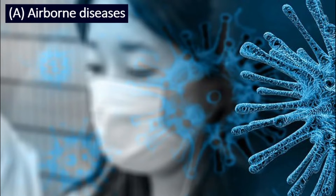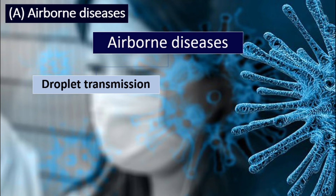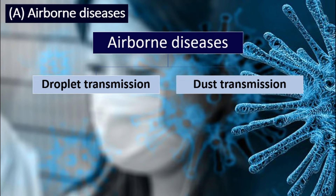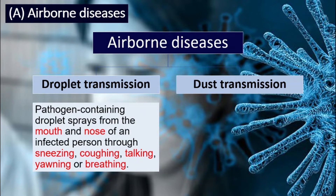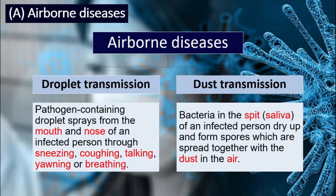Let's look at airborne diseases. Airborne diseases can be transmitted through two different types: droplet or dust. For droplet, the pathogen-containing droplet sprays from the mouth and nose — the sick person can spray those droplets by sneezing, coughing, talking, yawning, or breathing. For dust transmission, the sick person's spit or saliva dries up, forms spores, and they are spread with the dust in the air.